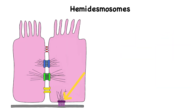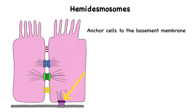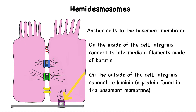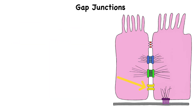Hemidesmosomes get their name because they look like half of a desmosome, but they serve a different function. Instead of linking two adjacent cells together, hemidesmosomes anchor a cell to the basement membrane — a specialized structure that underlies and supports epithelial tissues. The transmembrane glycoproteins here are integrins, not cadherins like we see in desmosomes. On the inside of the cell, those integrins connect to intermediate filaments made of keratin; on the outside, they bind to laminin, a protein found in the basement membrane. This strong attachment helps stabilize tissues, especially in areas like the skin where cells must stay firmly connected to underlying layers despite friction or mechanical stress.